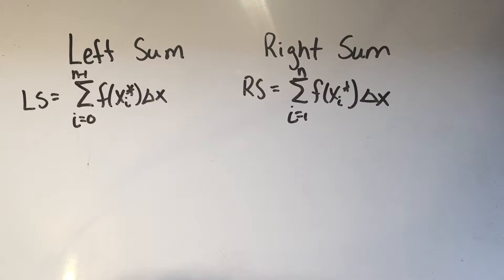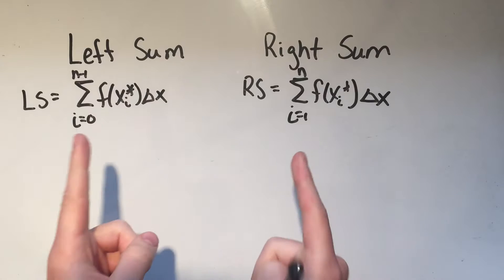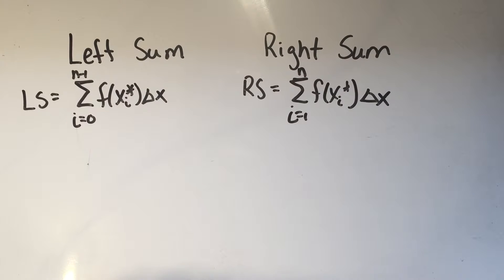When you're actually computing Riemann sums, you're going to have to do one of two types most often, namely the left sum and the right sum. Now there are some others like the midpoint and the trapezoid, but the two ones you're usually going to be doing are the left and the right, and they're very similar.